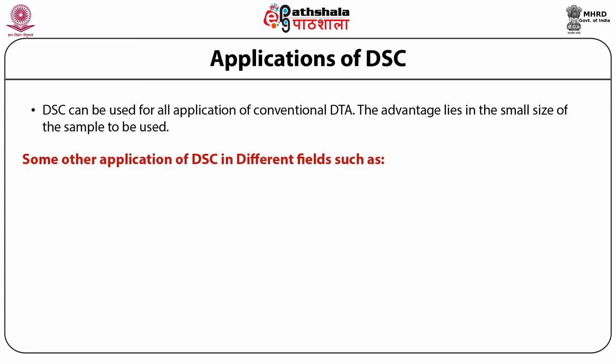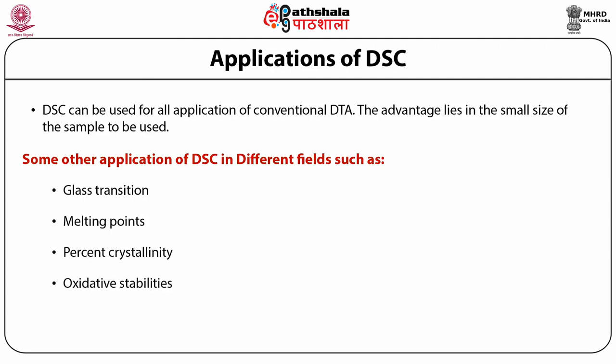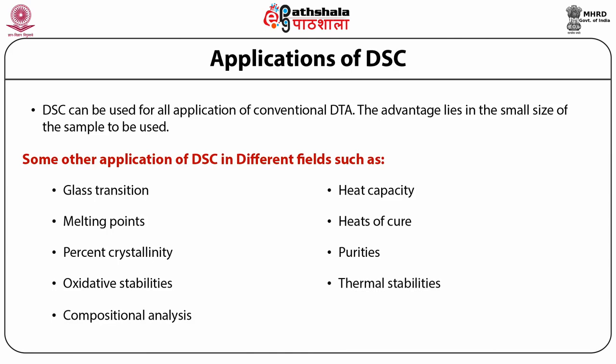Some applications of DSC include studying glass transition, melting point, crystallization times and temperature, heats of melting and crystallization, percent crystallinity, oxidative stability, composition analysis, heat capacity, heats of cure, completeness of cure, percent cure, purity, thermal stability, polymorphism, heat set temperature, and recyclates or regrind — all of which can be studied with DSC, whereas DTA has limited applications.